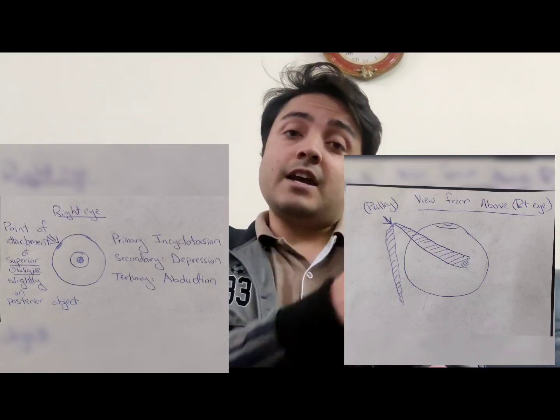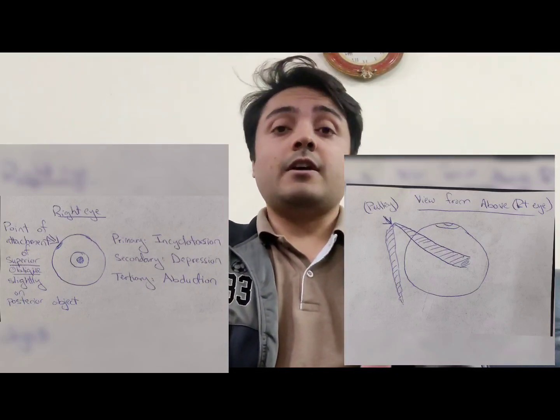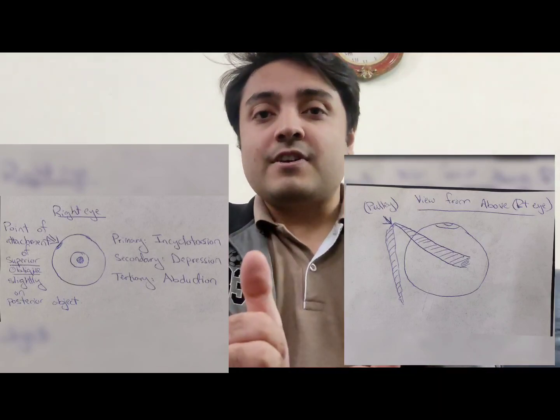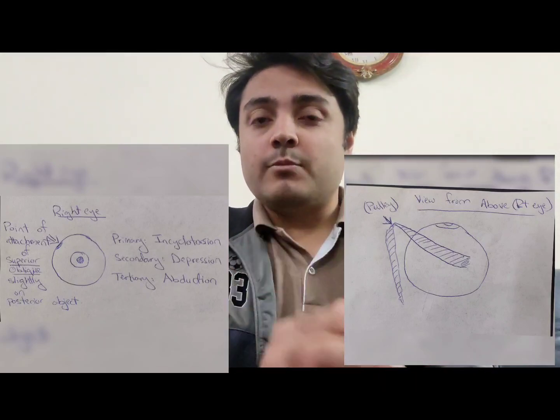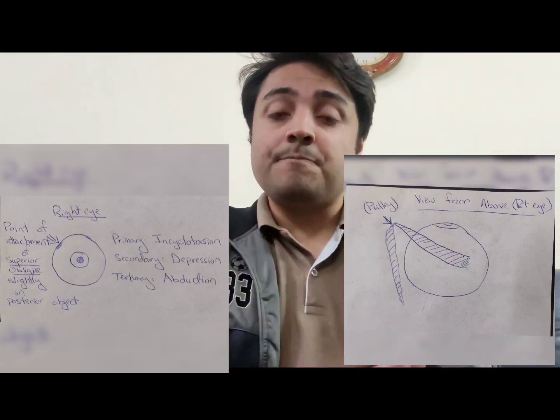My right eye is demonstrating incyclotorsion right now — that inward rotational movement. This is the primary function of the superior oblique. Remember there is a primary, secondary, and tertiary function. The primary function of the superior oblique is incyclotorsion. The secondary function is depression. The tertiary function is abduction.